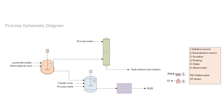Dear friends, here is the process schematic diagram for the production of sodium lauryl ether sulfate. Here you can see at number one the feed containers labeled with lauryl ethoxylate and chlorosulfonic acid. This goes with caustic soda for neutralization at number two, along with processed water. There are several steps involved in this production process, and you can understand easily from this diagram what the actual production process for SLES is.